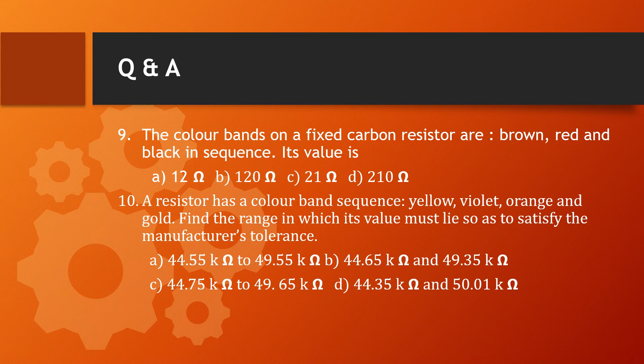Next, question number 9: The color bands on a fixed carbon resistor are brown, red, and black in sequence. Brown = 1, red = 2, black = 0 as multiplier (10 to the power of 0). The calculated value is the correct answer, Option A.